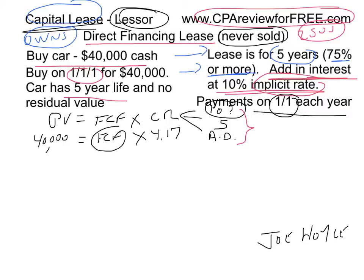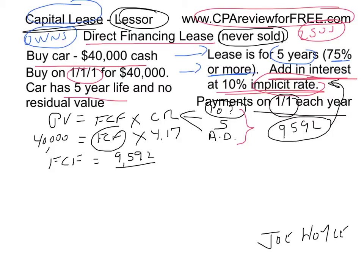Solving for future cash flows — much like algebra — you divide $40,000 by 4.17, giving annual payments of $9,592. If they charge $9,592 for this $40,000 car, that is the equivalent of earning a ten percent implicit interest rate every year. Once you know the payments, you can start making journal entries. On January 1, Year 1, when they buy the car, debit Car for $40,000 and credit Cash for $40,000.